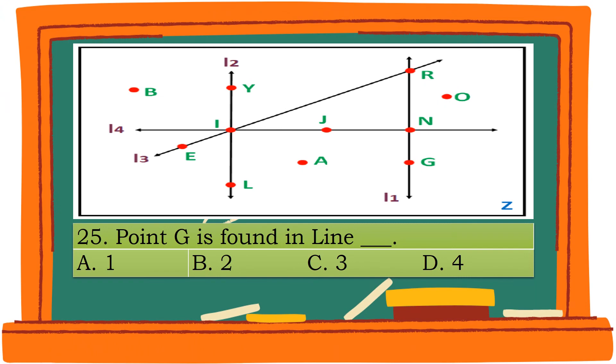Question 25. Point G is found in line blank. A. 1. B. 2. C. 3. D. 4. The correct answer is A. 1.